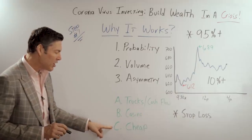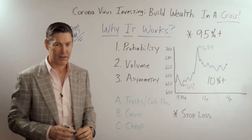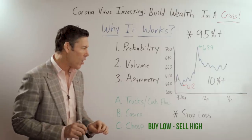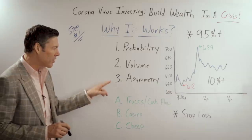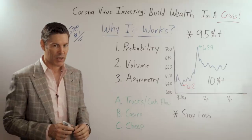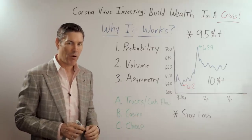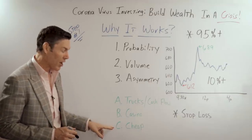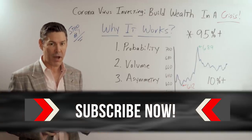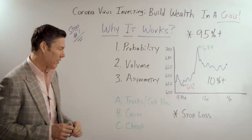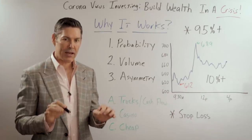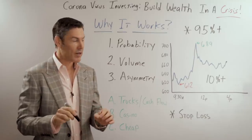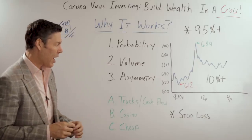Buying things cheap, selling them expensive — in other words, buy low, sell high. Why does this work? Because there's incredible asymmetry in that investment or speculation. Commodities right now — uranium, silver miners — would be a good example of that, where our downside is very low but our upside is extremely high.